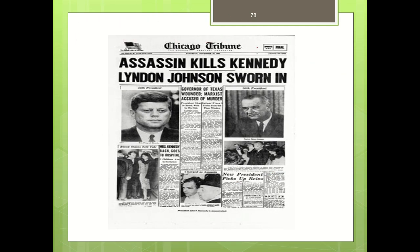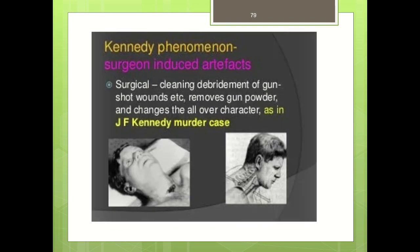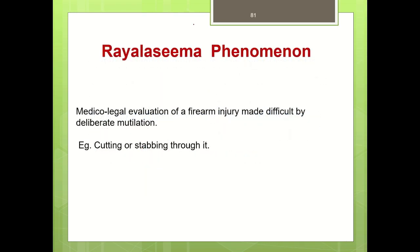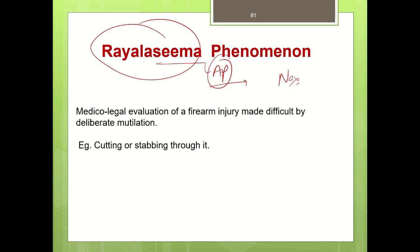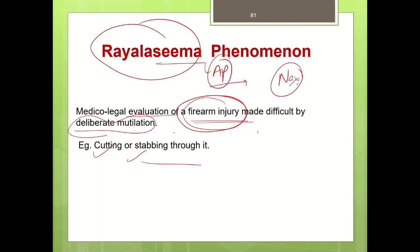The Kennedy phenomenon refers to a type of artifact introduced in the death of John F. Kennedy, where surgeons sutured or debrided the gunshot wound, making it impossible to give an opinion on which was the entry and which was the exit wound. This surgeon-induced artifact is known as the Kennedy phenomenon. Another phenomenon is the Raylasima phenomenon, named after a place in Andhra Pradesh, where firearm wounds are deliberately mutilated by cutting or stabbing through them, making it medically very difficult or impossible to examine the firearm injury or give an opinion.